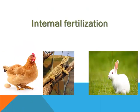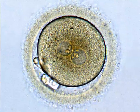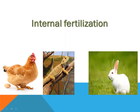Internal fertilization: the male releases sperm inside the body of the female. In birds and reptiles there are no external genitalia — external sex organs. Instead there is a tube-like structure called a cloaca, which is used for the transfer of semen. But in the case of mammals, external genitalia are present and semen is transferred inside the body of the female.